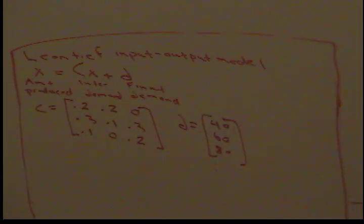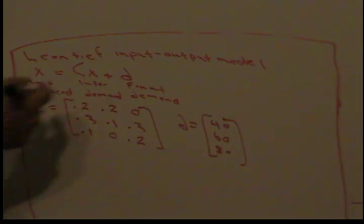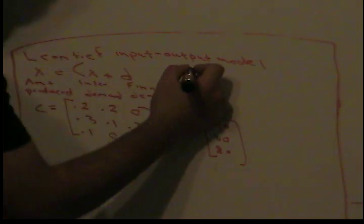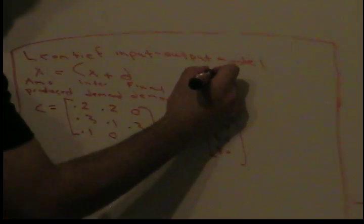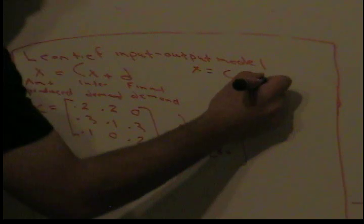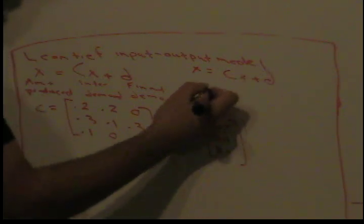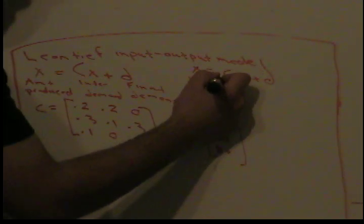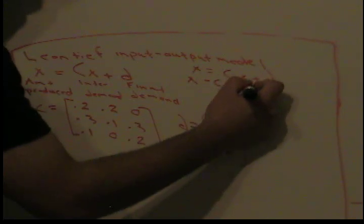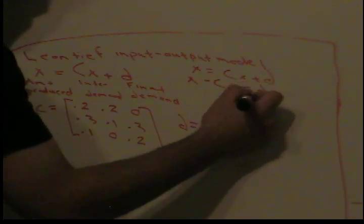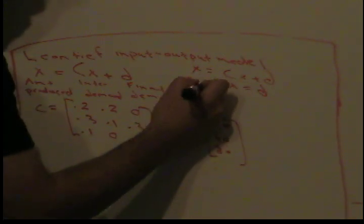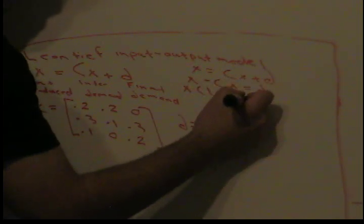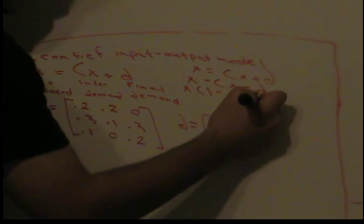If we manipulate the equation x equals Cx plus D — subtracting Cx from both sides gives x minus Cx equals D. Factoring out x, we get (1 minus C)x equals D.